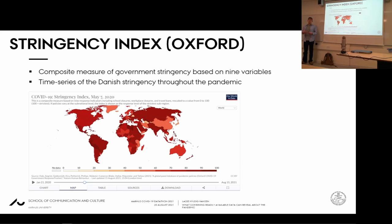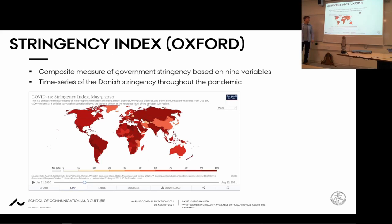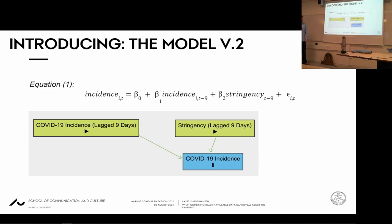We needed to model societal movement. For the stringency index, there are researchers at Oxford University who measured a composite measure of government stringency, giving us one number per day — a time series of stringency that we put into the model. Stringency is lagged nine days as well, because of the same time dependency: stringency nine days ago would affect cases today because people have to get infected, get tested, and for this to be observable in the data.